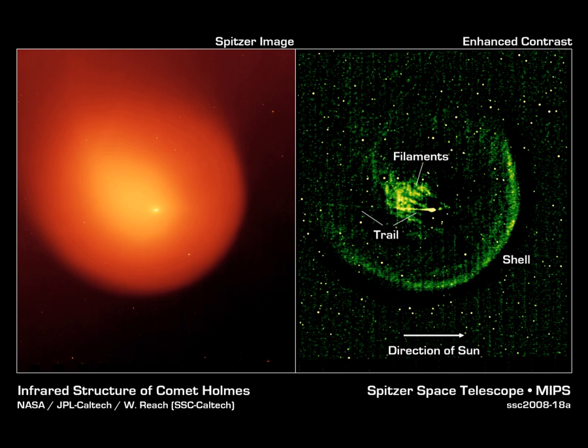Larger dust particles are left along the comet's orbital path, while smaller particles are pushed away from the Sun into the comet's tail by light pressure.